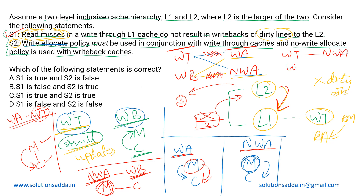In theory, all four mappings are possible, but in practical usage we go for write-through cache with no-write-allocate policy. Statement S2 says write-allocate must be used with write-through cache — that is incorrect. Therefore, statement S1 is true and statement S2 is false, so the answer is option A.